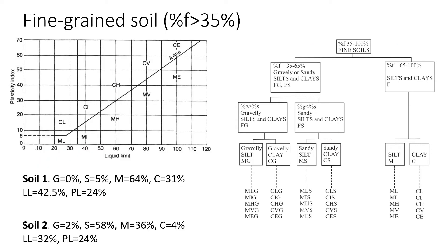We will look at two different soils: Soil 1 and Soil 2. We have the AASHTO classification chart on the right-hand side, and another thing we need is the plasticity chart, which is shown here.